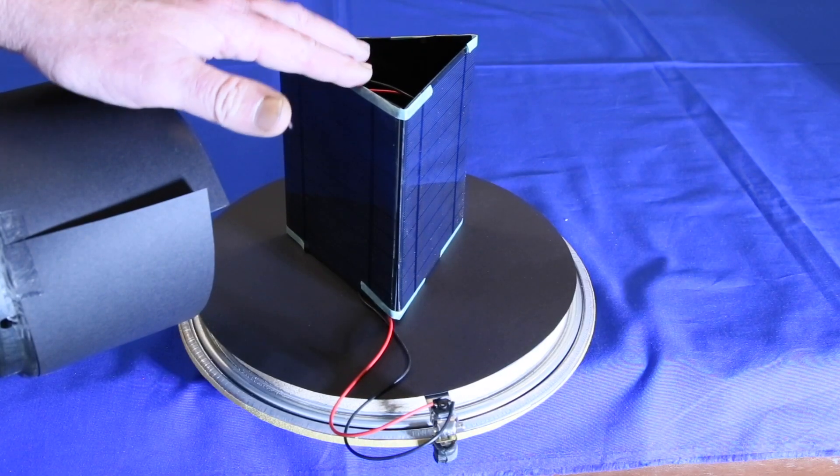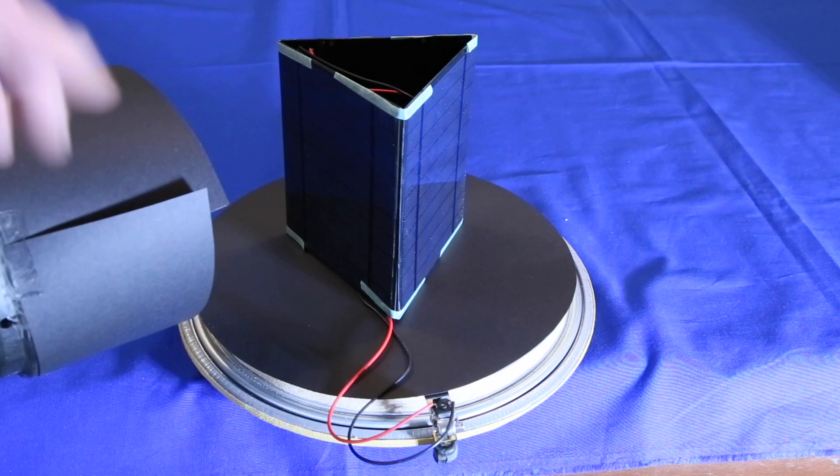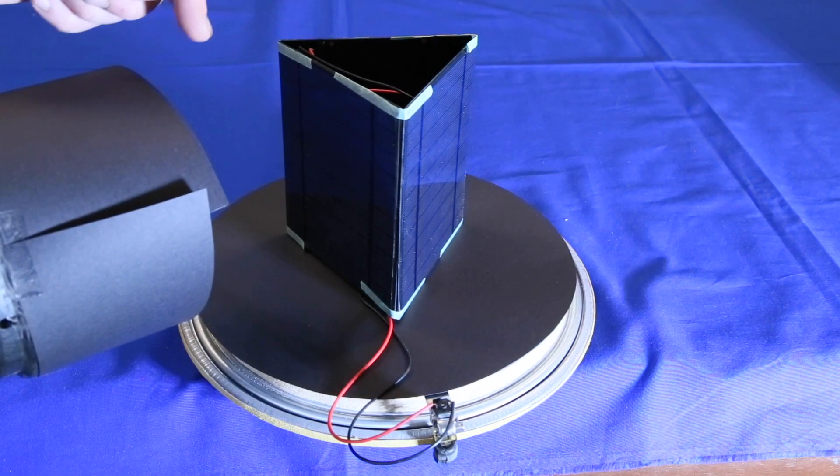The cell on the left is connected with its negative lead going to the negative lead on the motor, so that when the light is turned on it rotates clockwise.